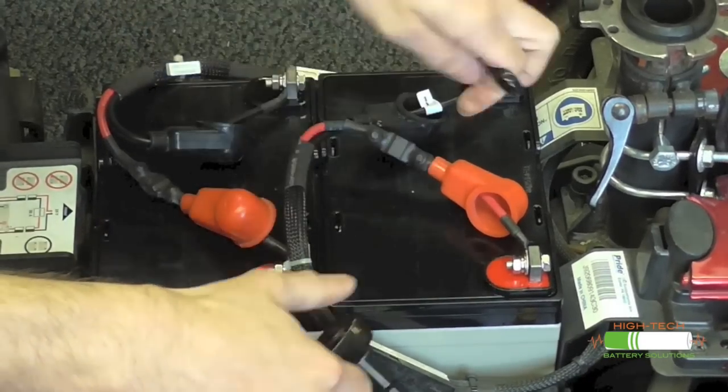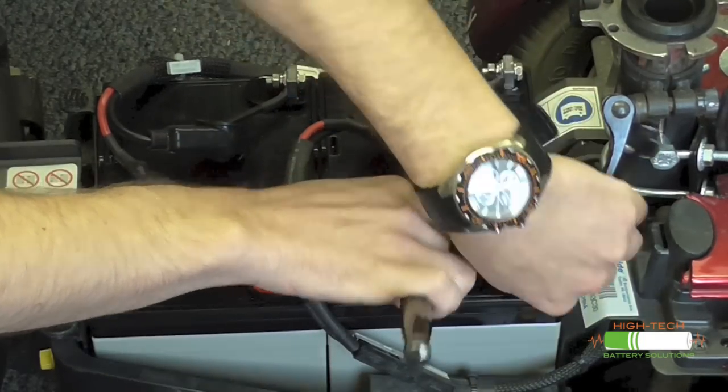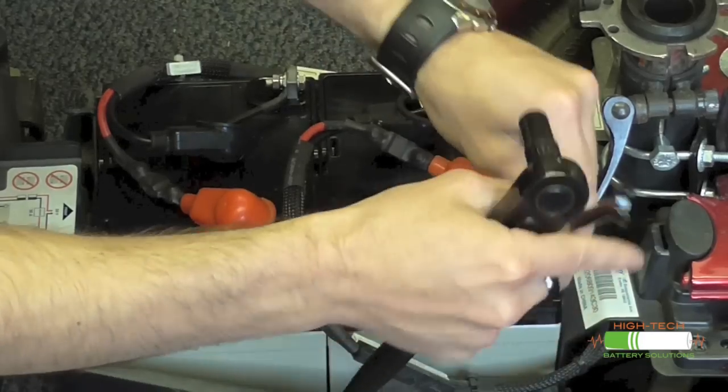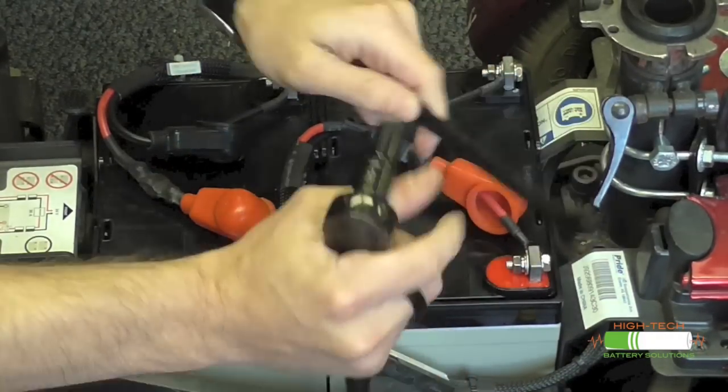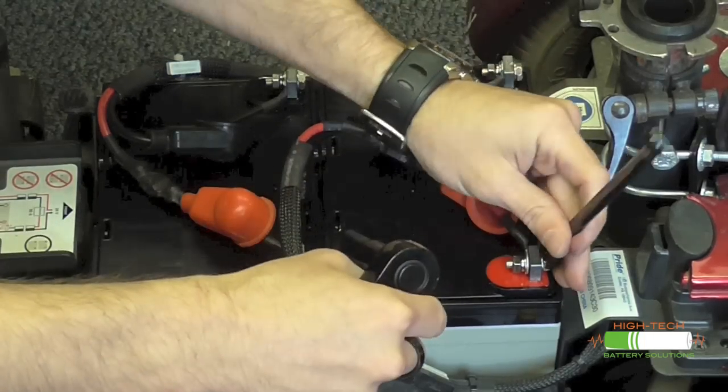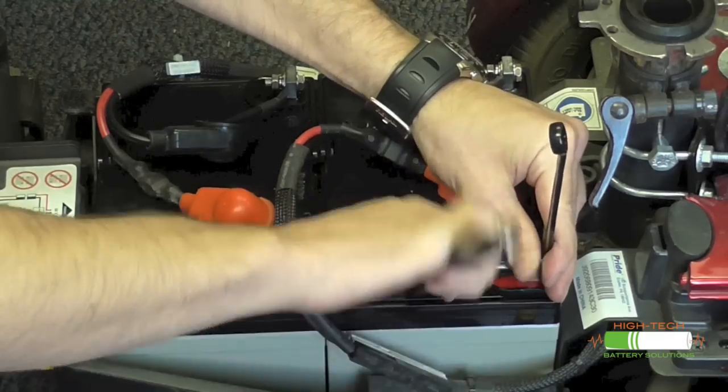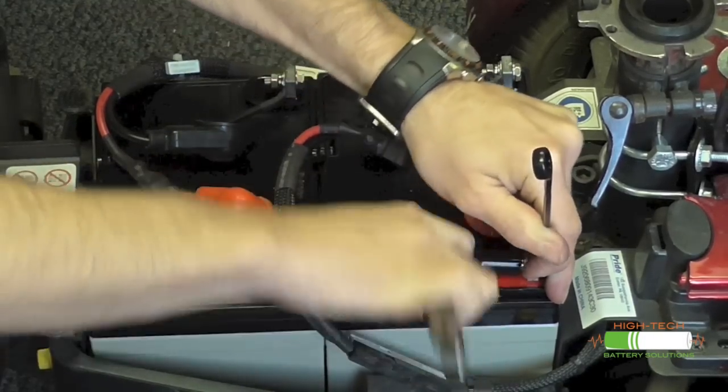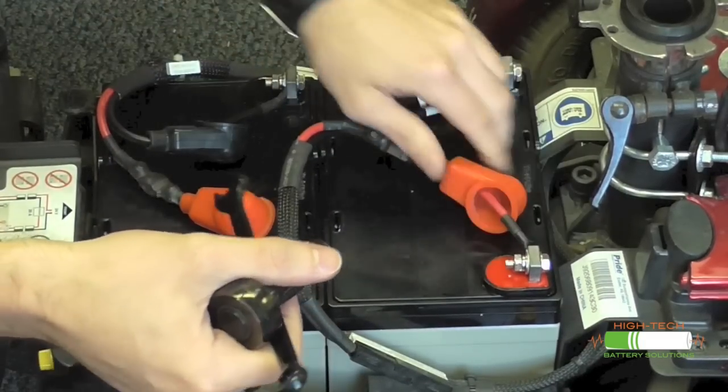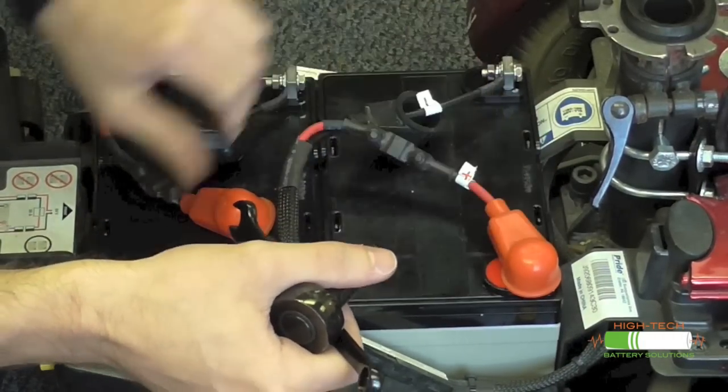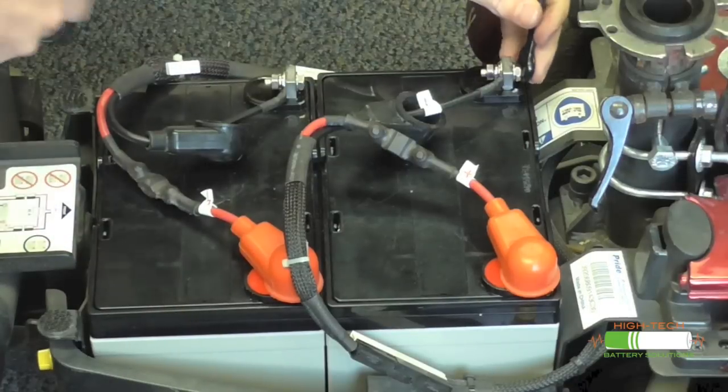So you don't need to go crazy when you tighten them down. Just give them a good wiggle there and make sure they can't move. But you don't need to grind into the actual lead terminal. Let's see what I'm going to do here. Go ahead and put the red caps back on there. And you can move on to the negative.